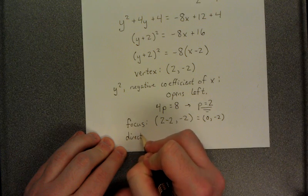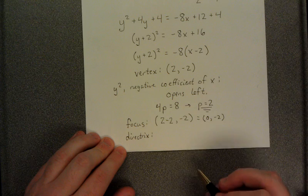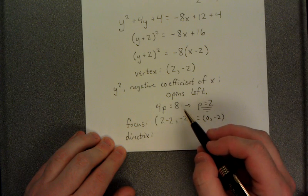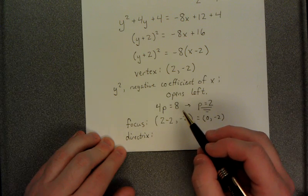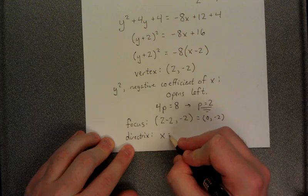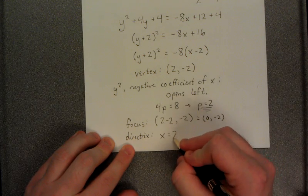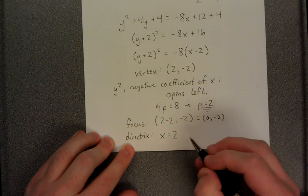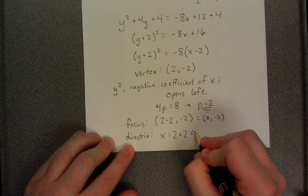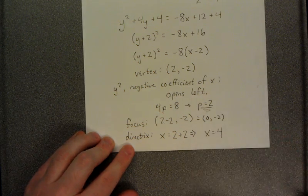The directrix, because we established that the parabola opens to the left, the directrix will be a vertical line, and it will be located to the right of the vertex. The x-coordinate of the vertex was 2, and because we're moving 2 more units to the right from the fact that p equals 2, we'll add another 2 to that. Which tells us that our directrix is x equals 4.